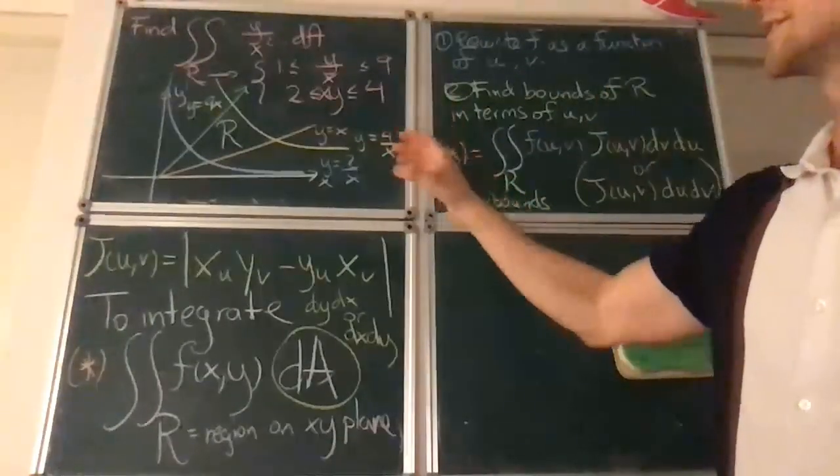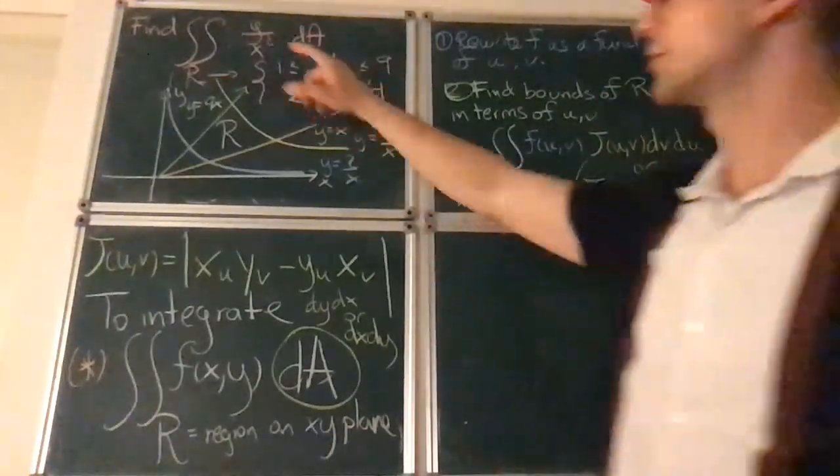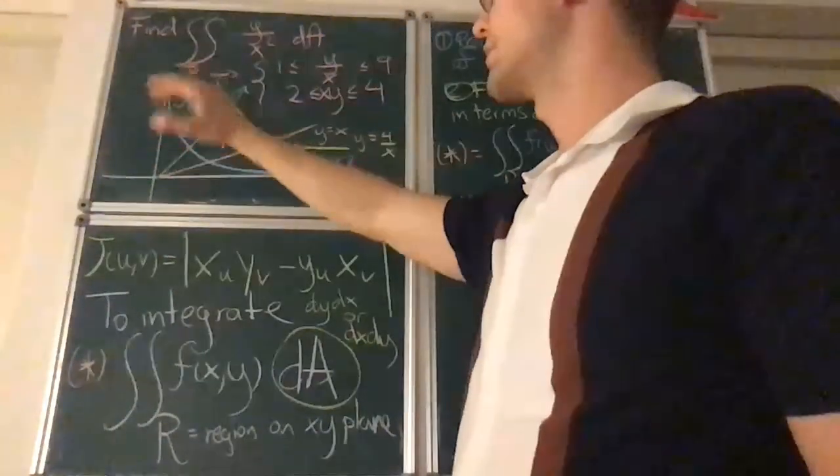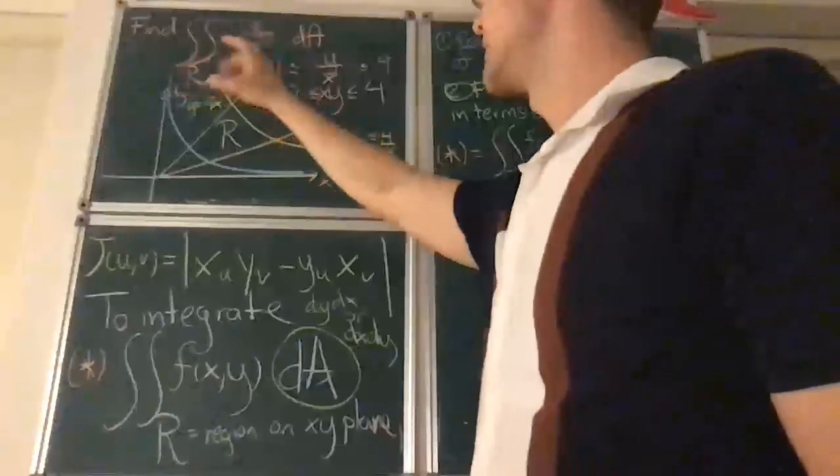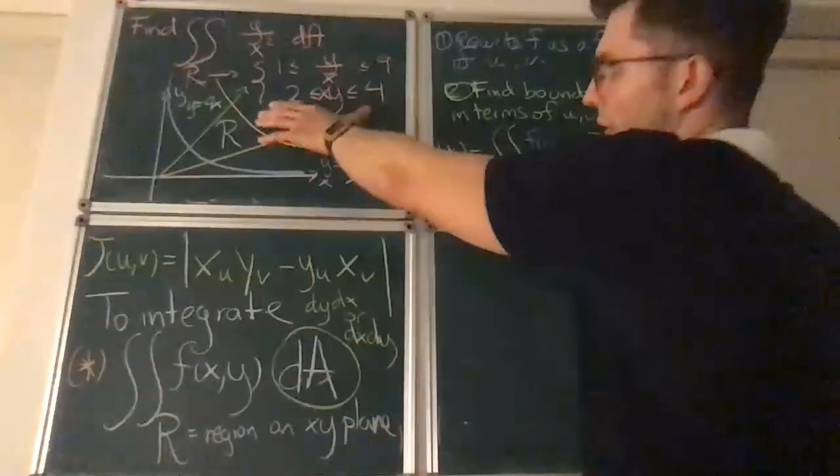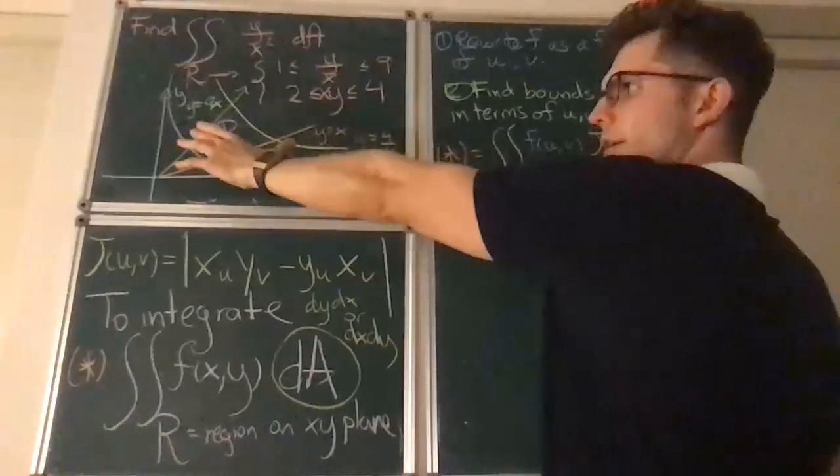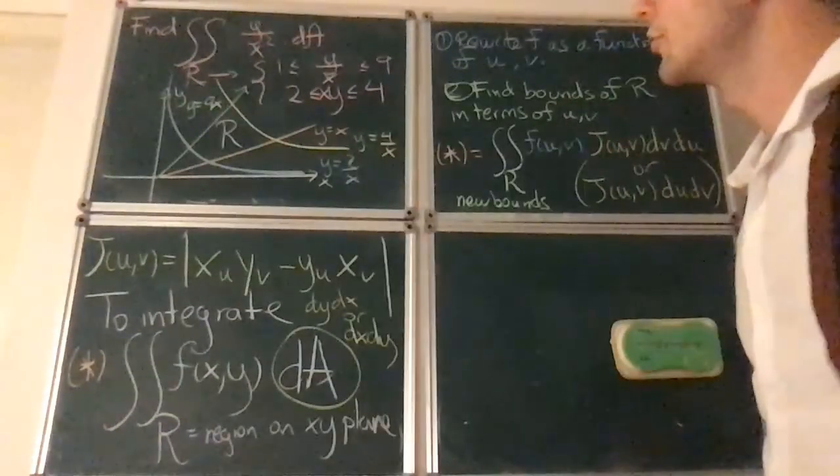OK, as a first example of the Jacobian, suppose that you want to integrate y over x squared over a region of integration R, which is given by these inequalities. So the point is that from these inequalities, you should recognize this region. How would you do that?